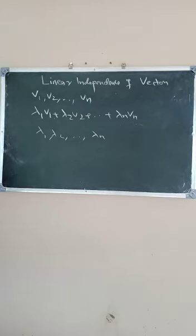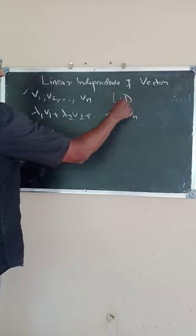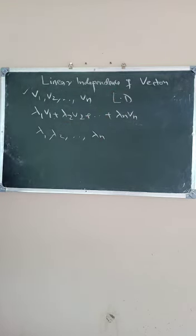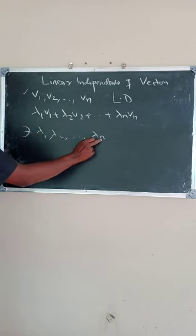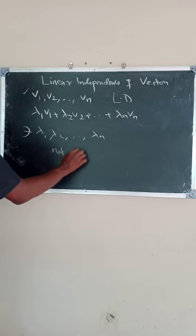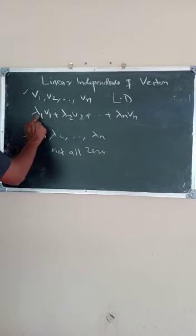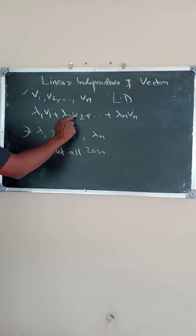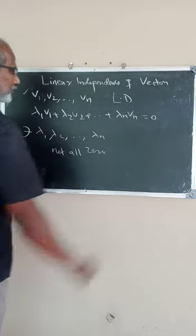Second definition: a set of vectors V1, V2, ... Vn is said to be linearly dependent if there exist scalars lambda 1, lambda 2, ... lambda n, not all zero, such that lambda 1 V1 plus lambda 2 V2 plus ... plus lambda n Vn equals zero.